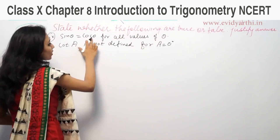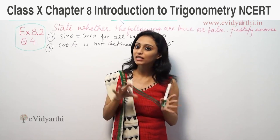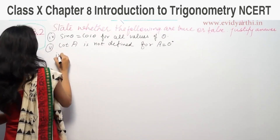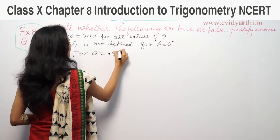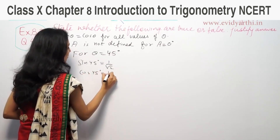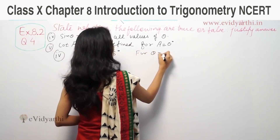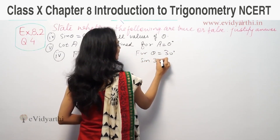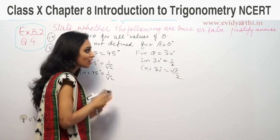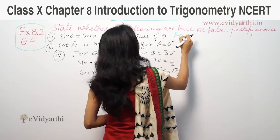This is part 4: sinθ = cosθ for all values of θ. For θ = 45°, sin 45° = 1/√2 and cos 45° = 1/√2, so they are equal here. But for θ = 30°, sin 30° = 1/2 and cos 30° = √3/2, so they are not equal. Therefore sinθ and cosθ are not equal for all values. This statement is false.